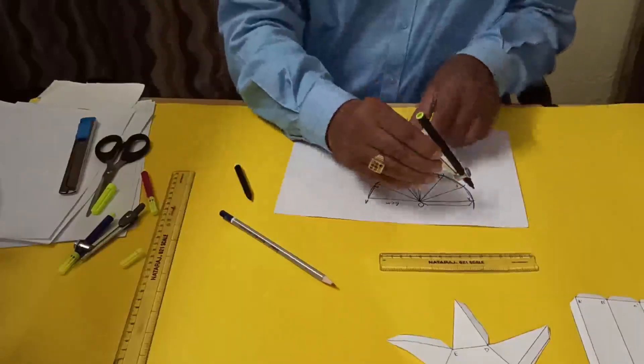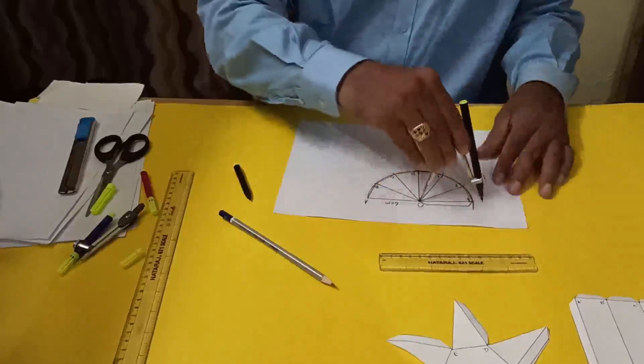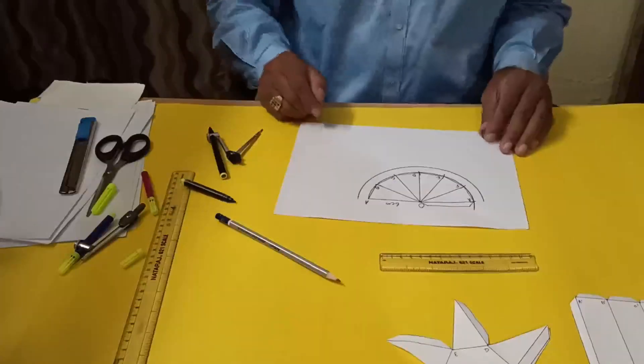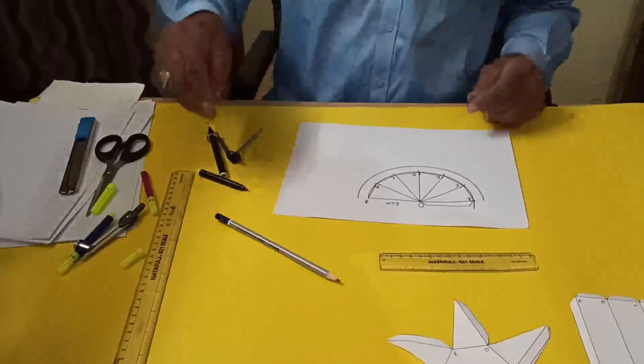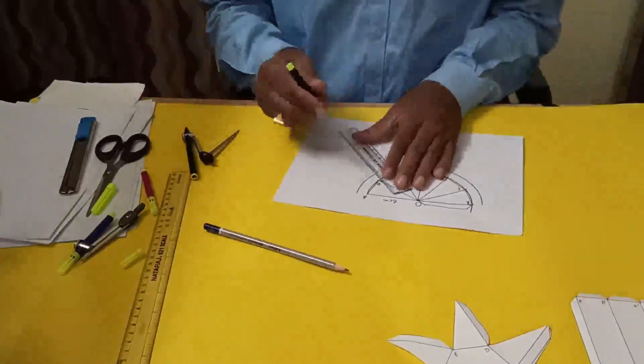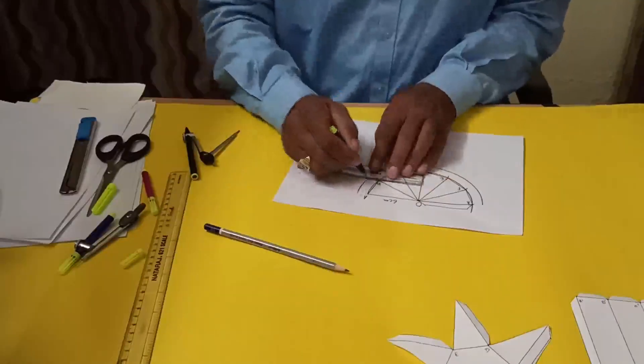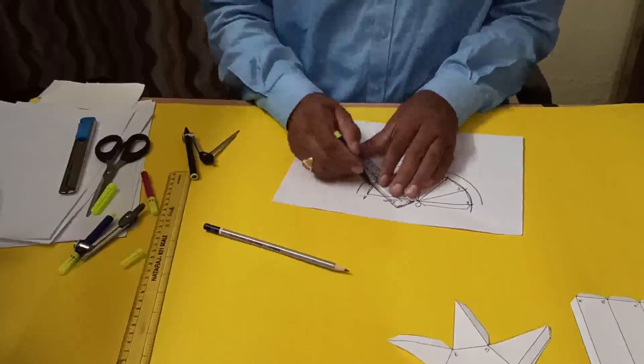Taking 7 centimeters as radius, we have to draw. Now we have to cut the figure, but before cutting you have to make the border like this so that it will fit correctly.